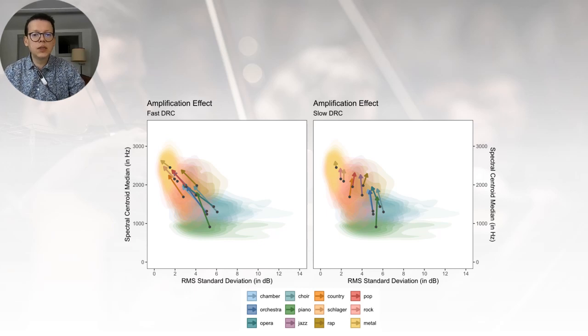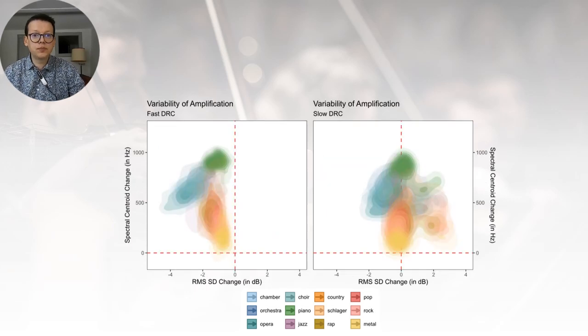However, this is only a median effect by genre. There is a large variability of amplification within a single genre, and a clear overlap between some genres. The effect of amplification on these descriptors is also more pronounced for more classical genres than for more modern genres.